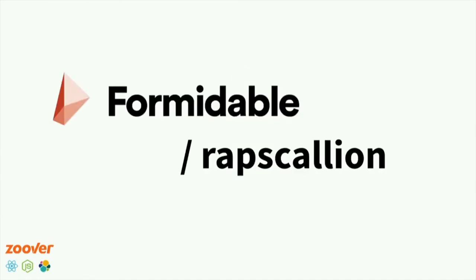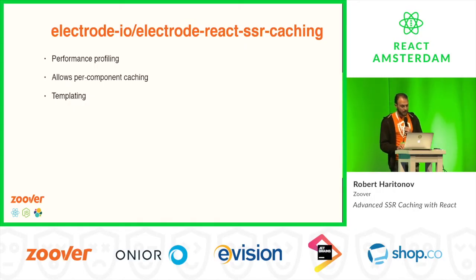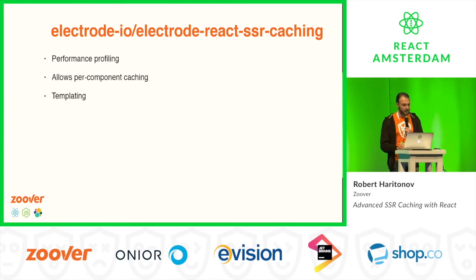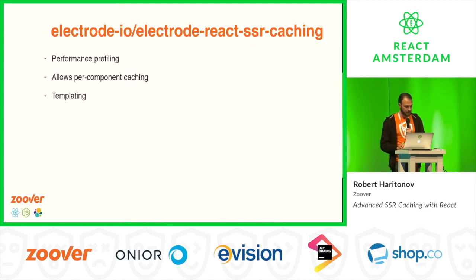It could seem that you just take a solution like this and you're all good, but it's not that easy because there are some catches. Another project I found recently from Formidable is solving most of the problems with traditional server-side rendering caching approaches for React. What makes Rapscallion different from Electrode's solution is that, first of all, it's asynchronous — which allows you to cache on remote servers, giving you a common cache for clusters. It also supports external servers and can do streaming, which was previously possible only with complete forks of React, but with this you can get it almost for free and it's super easy to use.